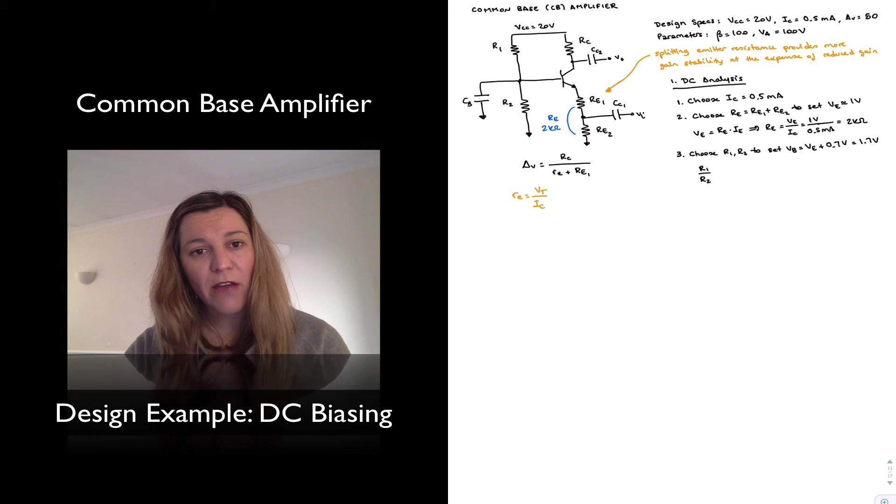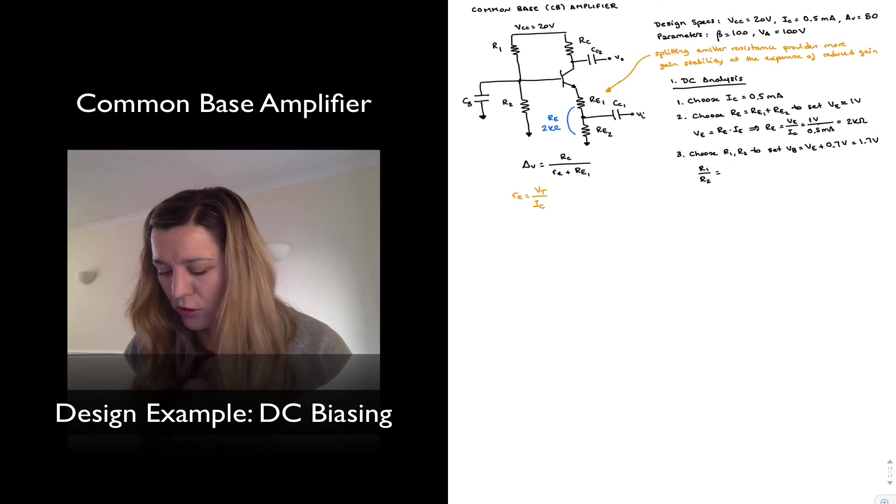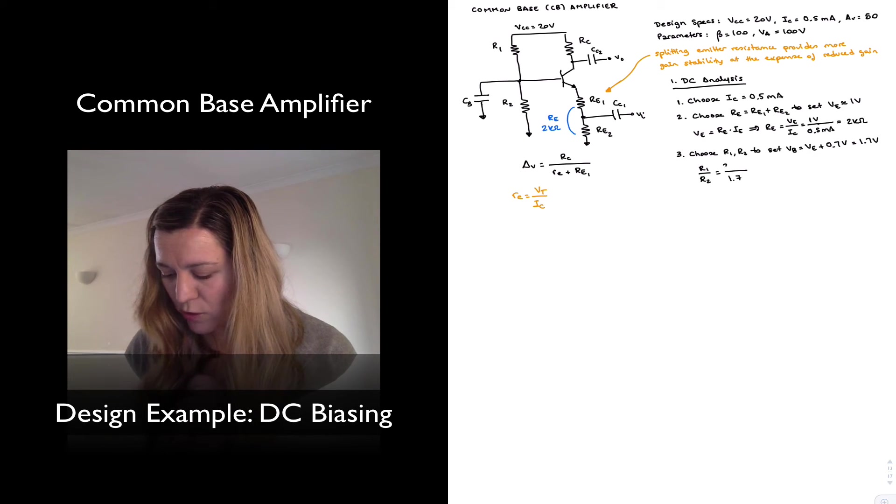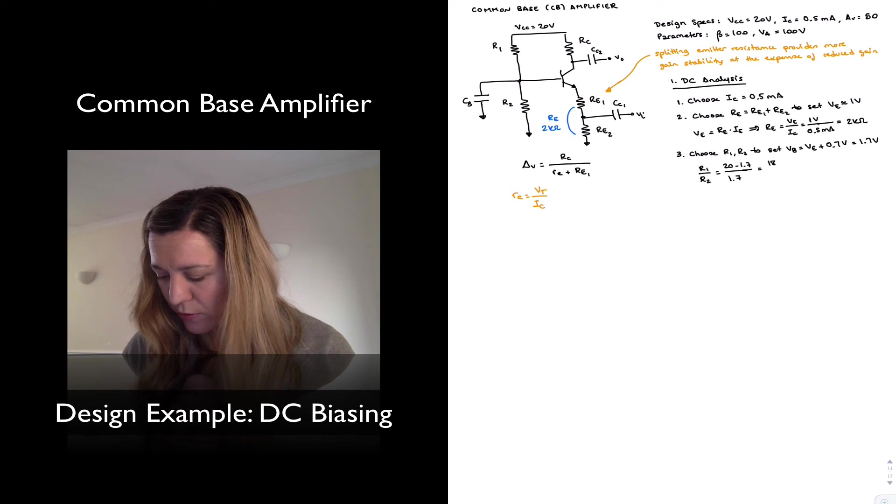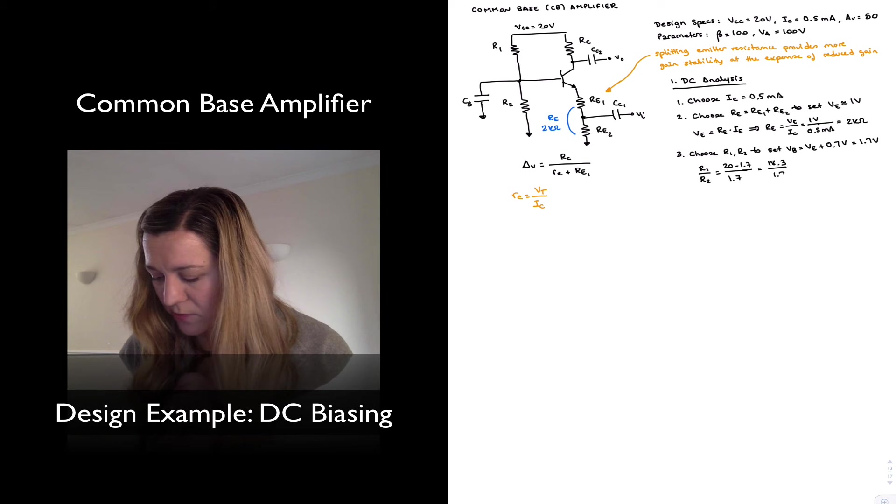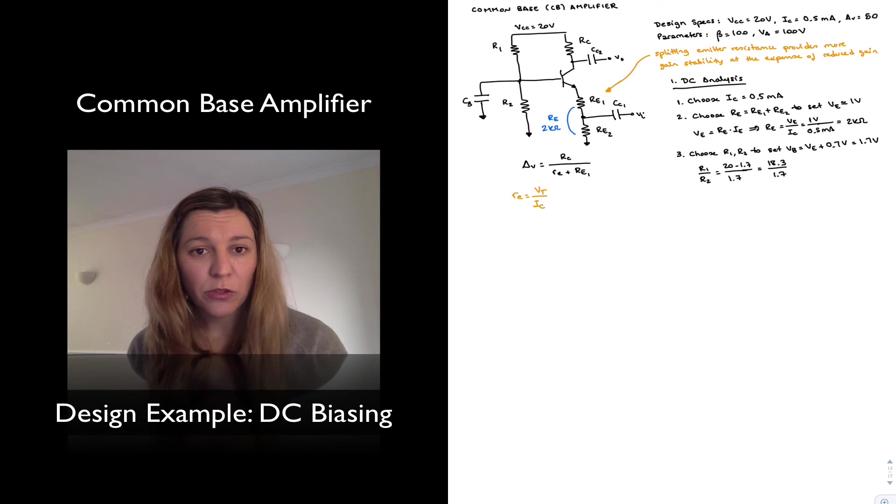If I assume I have a perfect voltage divider, meaning no current flowing into the base of the transistor, the ratio of R1 to R2 will be equal to the ratio of the voltage drop across R1 and the voltage drop across R2. I want the voltage drop across R2 to be 1.7 volts, which means I want the voltage drop across R1 to be 20 minus 1.7. So that will be 18.3 over 1.7. And there are multiple resistor values that will meet that ratio.